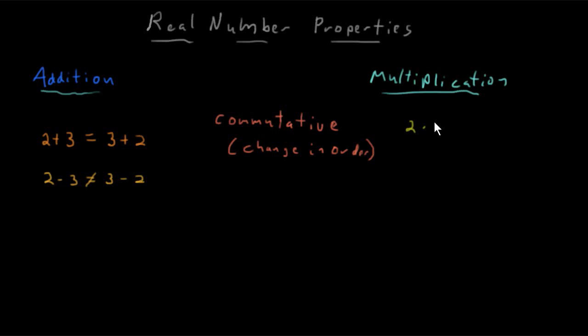But for multiplication, there is a commutative property. 2 times 3, if you multiply numbers in that order, you get the same thing as 3 times 2. By the way, these properties apply to all real numbers. And I'm just using simple positive integers as examples here. But I could be using any real number or numbers.